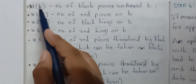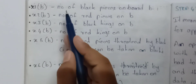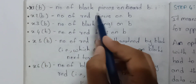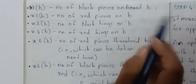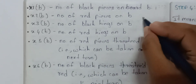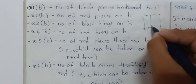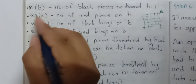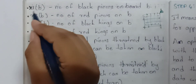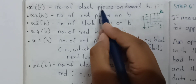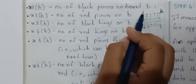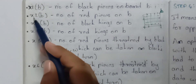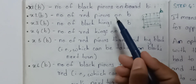We will have a variable for a board state. X1 is the number of black pieces on the board b — any number of black pieces.